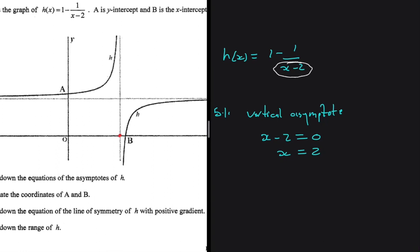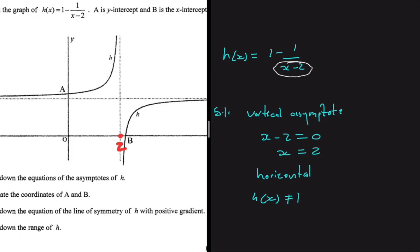Solving x minus 2 equals 0 gives us x equals 2. So our vertical asymptote is x equals 2 — that is the x value at that point on the graph. Now for the horizontal asymptote: H(x) can never be equals to 1, because for that to happen the fraction part would need to equal 0, which can never happen. So our horizontal asymptote is y equals 1.